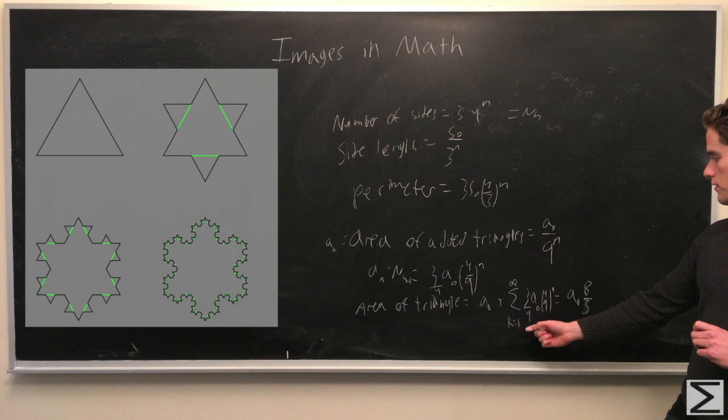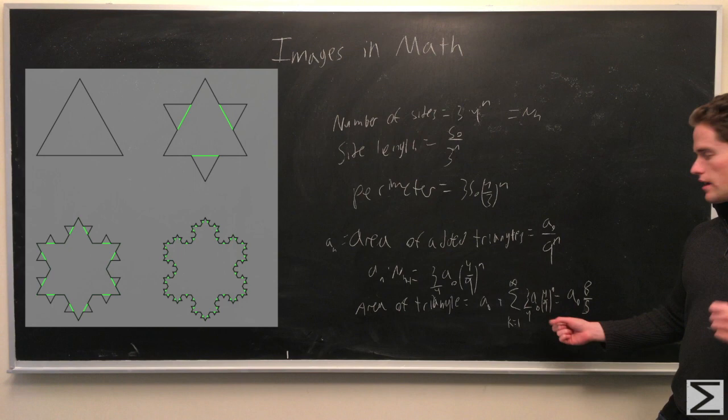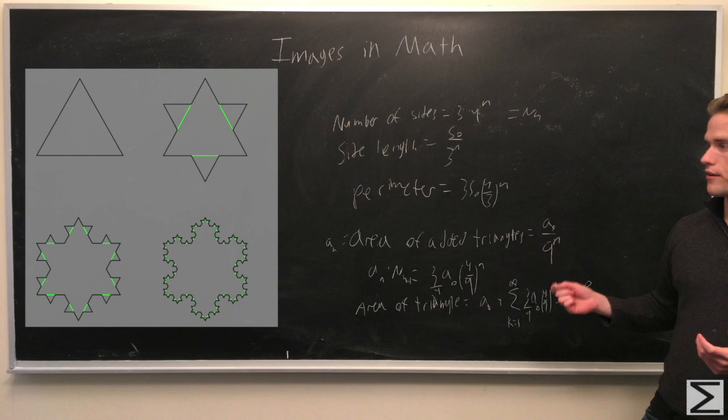And if you sum all this up you'll get it's equal to a₀ times 8/5, which is finite. So this figure in fact has finite area, infinite perimeter but finite area.